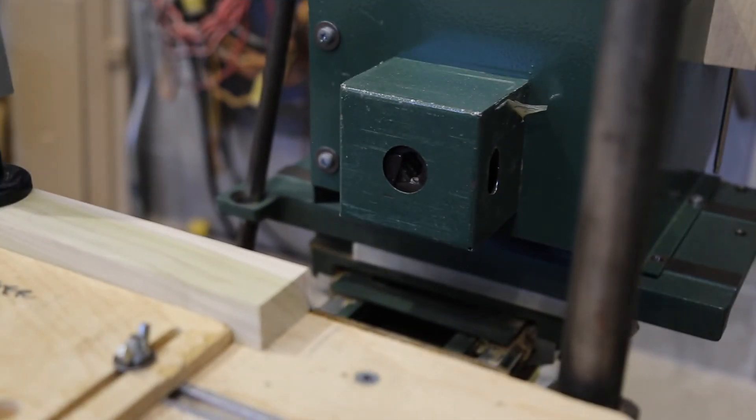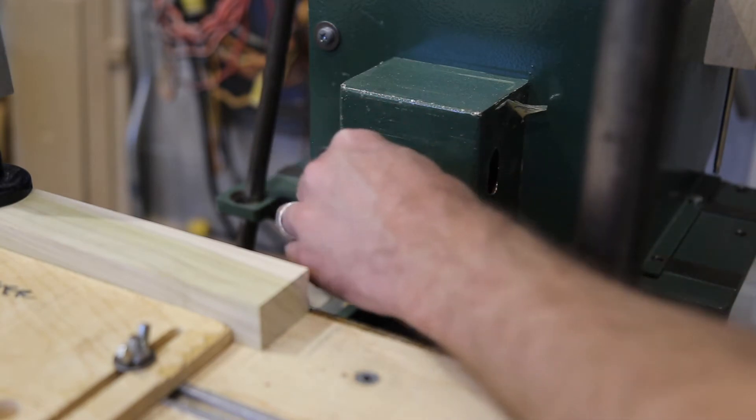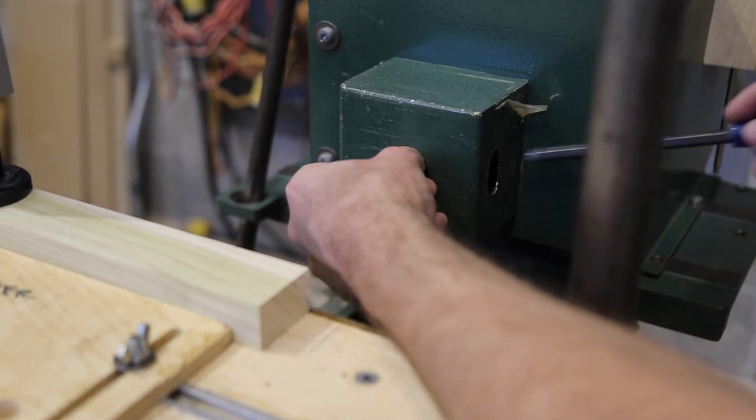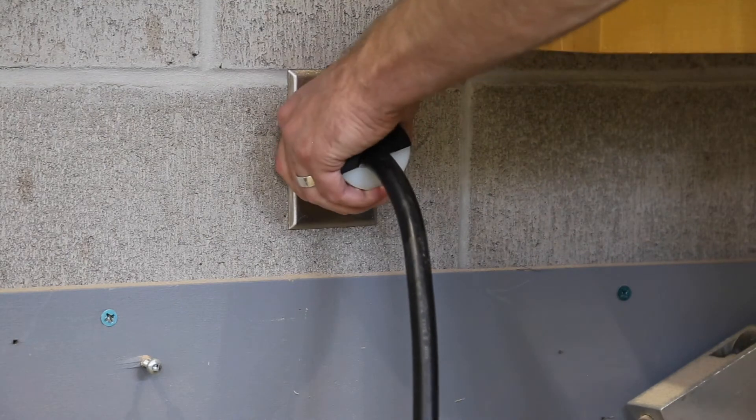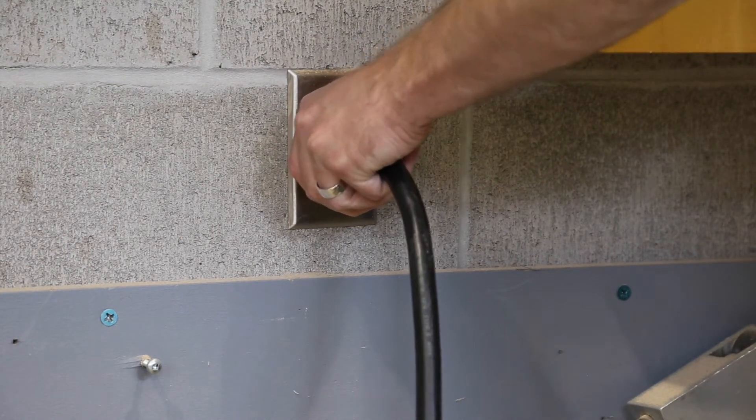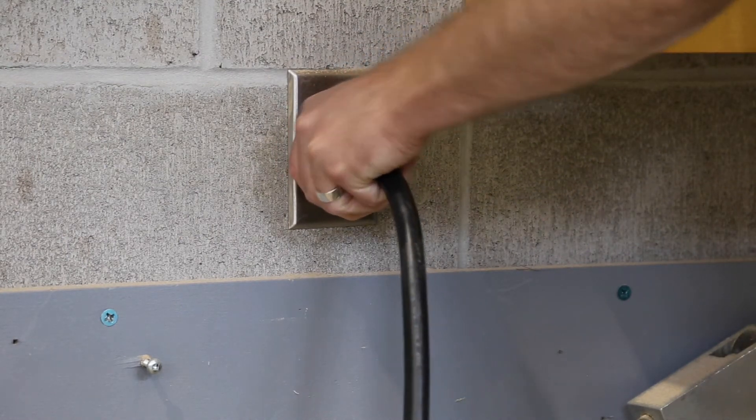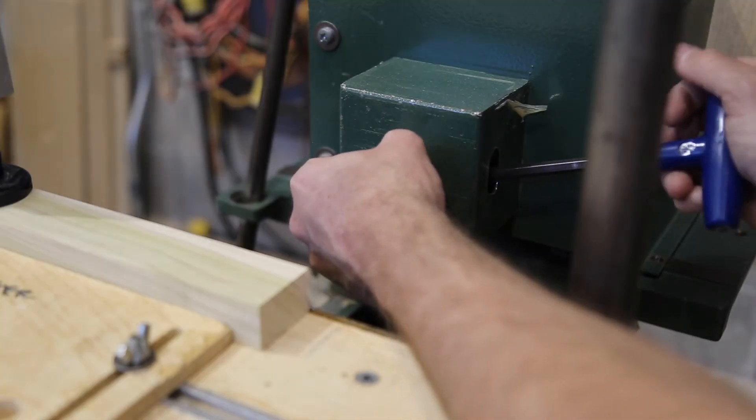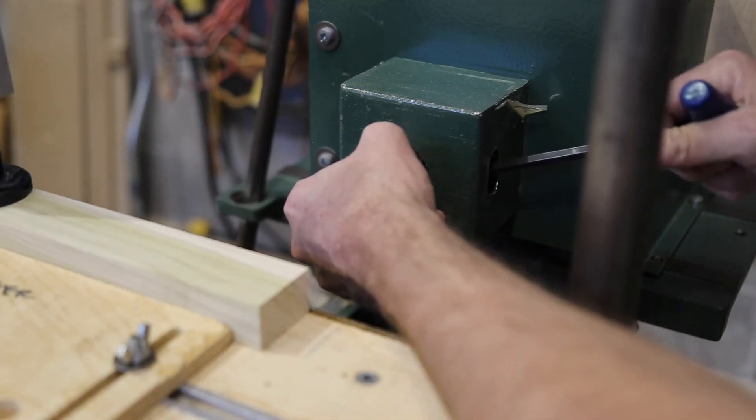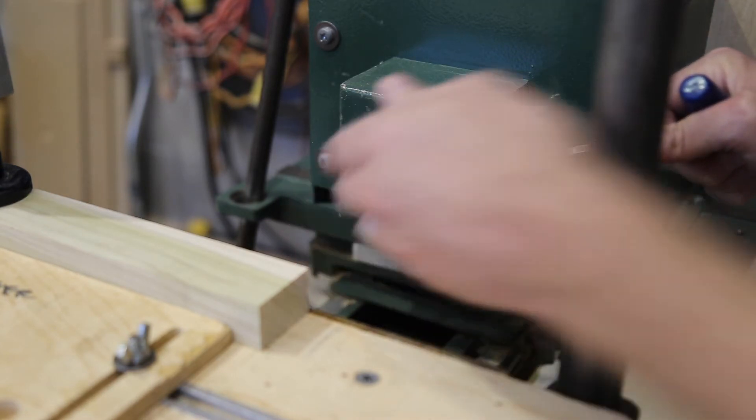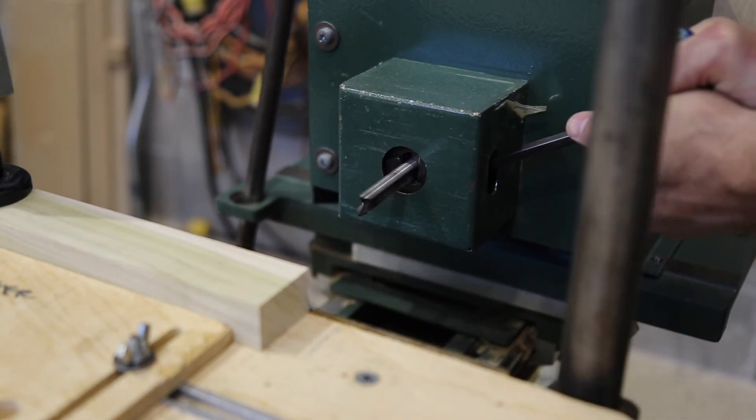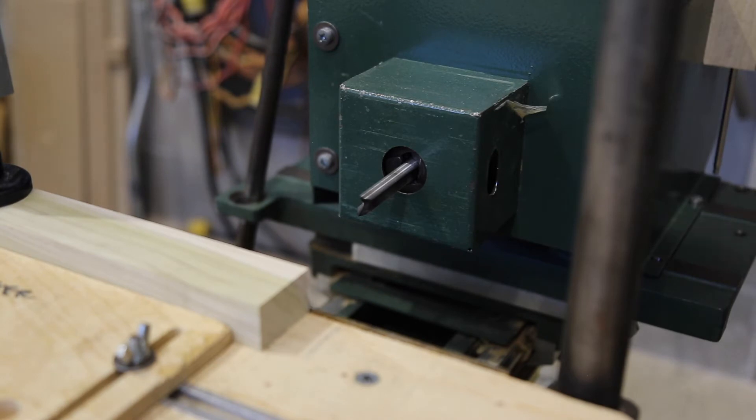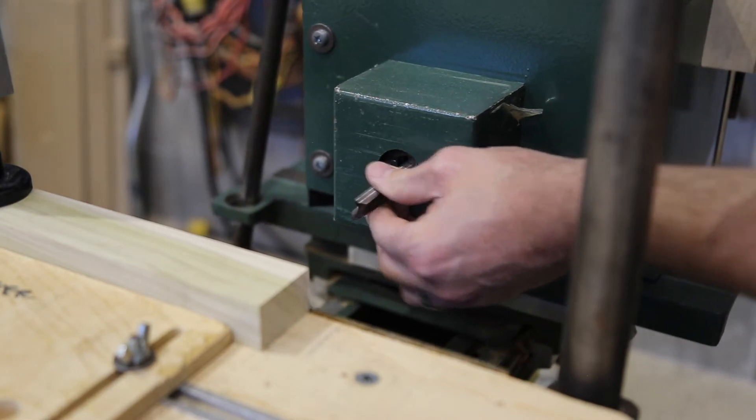Next we're going to mount the bit in the spindle. Just to be safe it's a good idea to unplug the machine when you're doing this. To tighten the spindle you'll find an allen key on the side of the machine. Turn the spindle so that its locking mechanism lines up with the slot in the machine's housing. Tighten the screw and check that your bit is firmly in place.